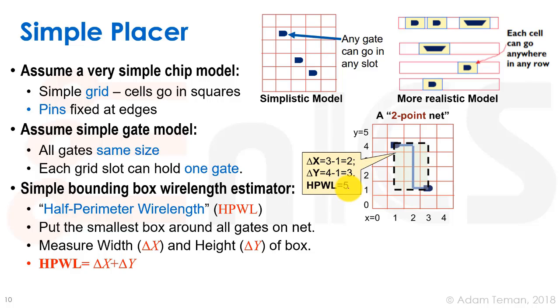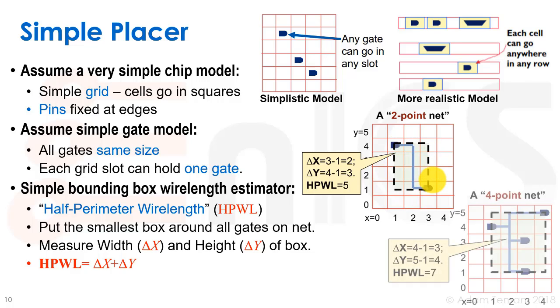Why is that good? We see it kind of tells us what the two-point net probably looks like when we're assuming this type of Manhattan routing where we can only route vertically and horizontally. But how does it deal with a larger net? Let's say we have a four-point net where this gate has a fan-out of three and it's driving this cell, this cell, and this cell.